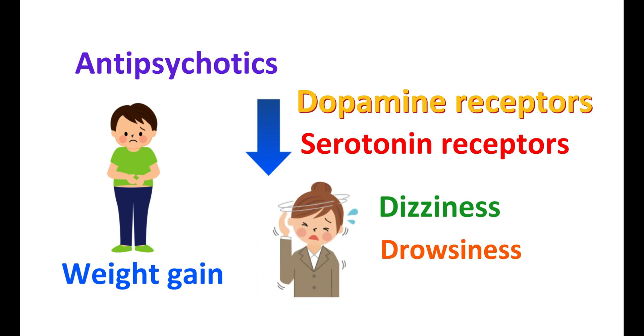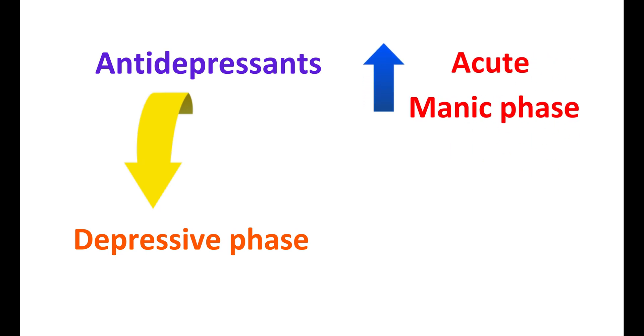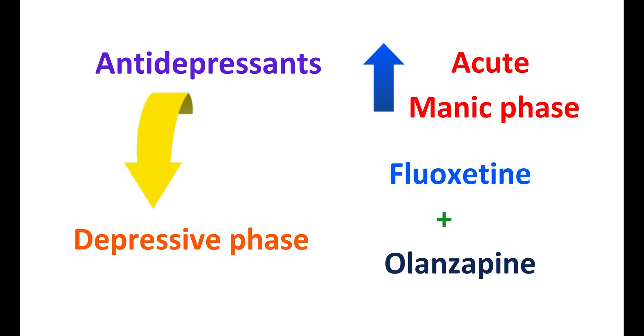Antidepressants like fluoxetine, citalopram, escitalopram, paroxetine, and sertraline can also be used to control mood swings. However, many antidepressants can reduce the depressive phase but stimulate an acute manic phase. Therefore, antidepressants are not used alone and may be combined with other mood stabilizers or antipsychotics. For example, fluoxetine can be combined with olanzapine to achieve better mood control.